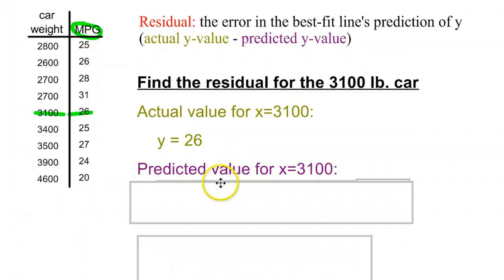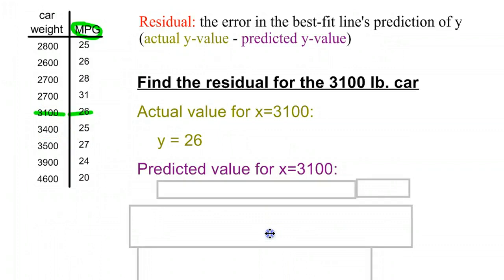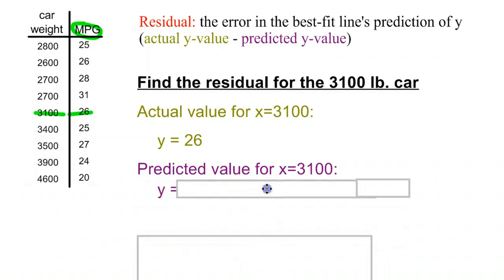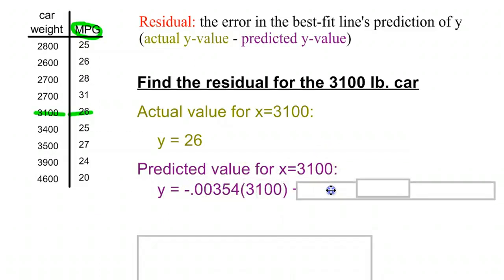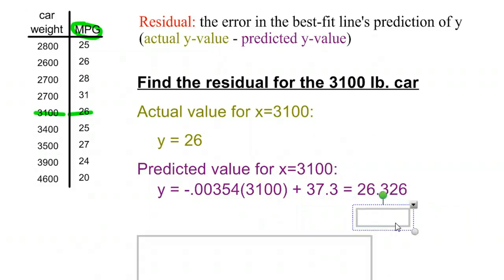Now let's go ahead and make a prediction for when x is 3100. In order to do that, we need to use that line of best fit that we had from before. So y is going to be equal to our slope, negative 0.00354, multiplied by our x value of 3100. So we take our slope, our predicted x value, and then we add on our y-intercept. And when we multiply that out, we're going to get 26.3, give or take.